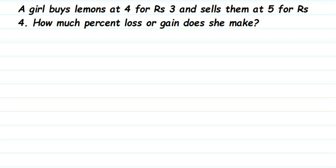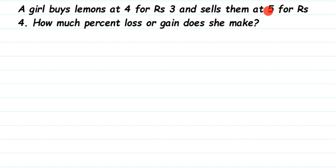Here's a question: a girl buys lemons at 4 for rupees 3 and sells them at 5 for rupees 4. How much percent loss or gain does she make? This is a slightly tricky question. She bought 4 lemons for 3 rupees and sold 5 lemons for 4 rupees. We need to find how much percent loss or gain she got.